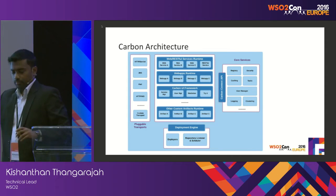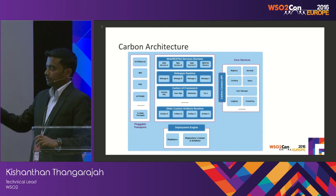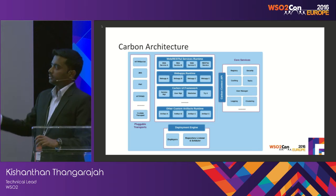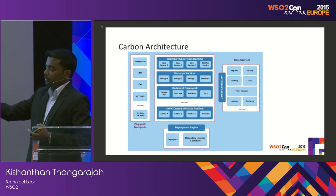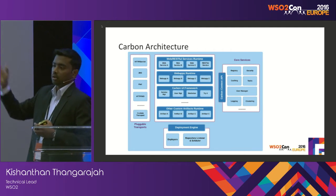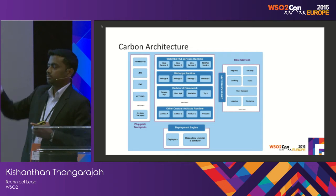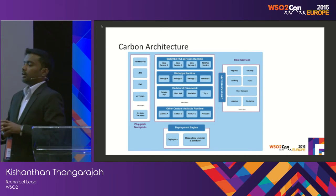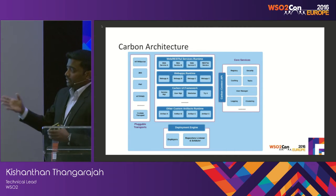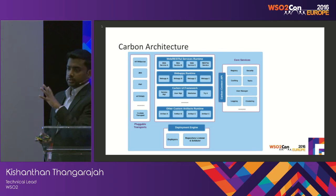The deployment engine is responsible for deploying runtime artifacts into memory. When the server is running and you have developed an artifact — for example, a web app — you want to deploy it into the running system. The deployment engine handles this. It has a set of deployers, each associated with a runtime: web app deployers, data services deployers, ESB artifact deployers, and web services deployers. Once the deployment engine deploys an artifact, it gets added to the runtime memory. These are the three main components in the Carbon runtime architecture.